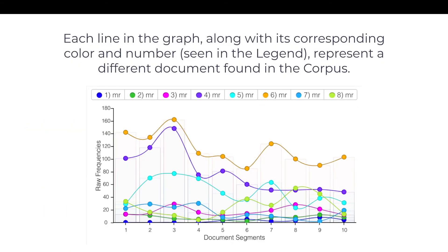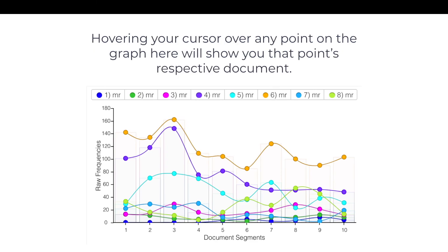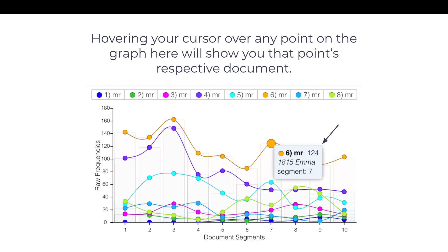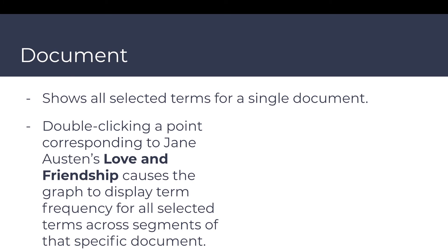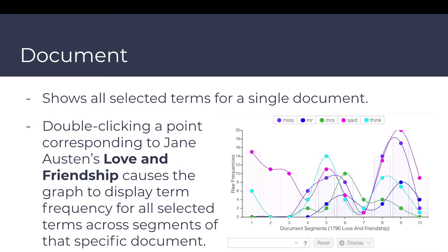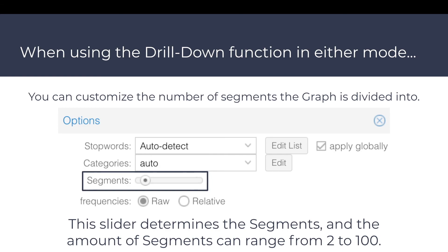Each line in the graph, along with its corresponding color and number, represents a different document in the corpus. For example, the orange line represents document number 6, Emma, 1815. Hovering your cursor over any point will show that point's respective document. 'Document' shows all selected terms for a single document — for example, double-clicking the point for Jane Austen's Love and Friendship would display term frequency for all selected terms across different segments of that specific document. When using the drill down function in either mode, you can customize the number of segments, ranging from 2 to 100 using the slider.